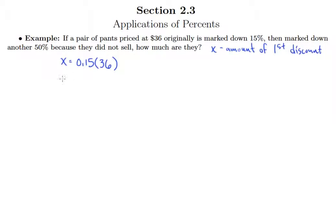And so that just requires that we multiply, no algebra involved there at all. So we've got 5 times 6 is 30, 5 times 3 is 15 plus 3 is 18, and 6 and 3, so we end up with $5.40. That's the amount of our first discount.